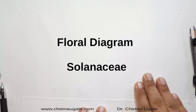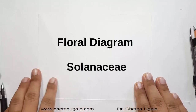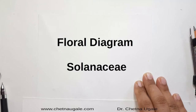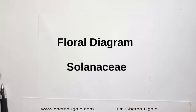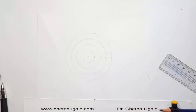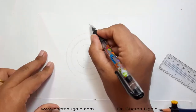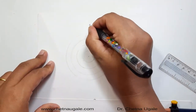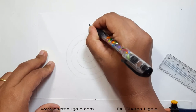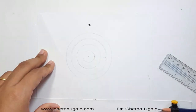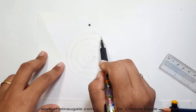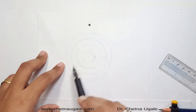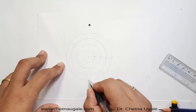Today we are starting with the floral diagram of the Solanaceae family. The morphological description of the Solanaceae family was already discussed in the previous video. Let's start the floral diagram with the mother axis. Next to the mother axis, there is a presence of all different floral whorls in a circular arrangement.